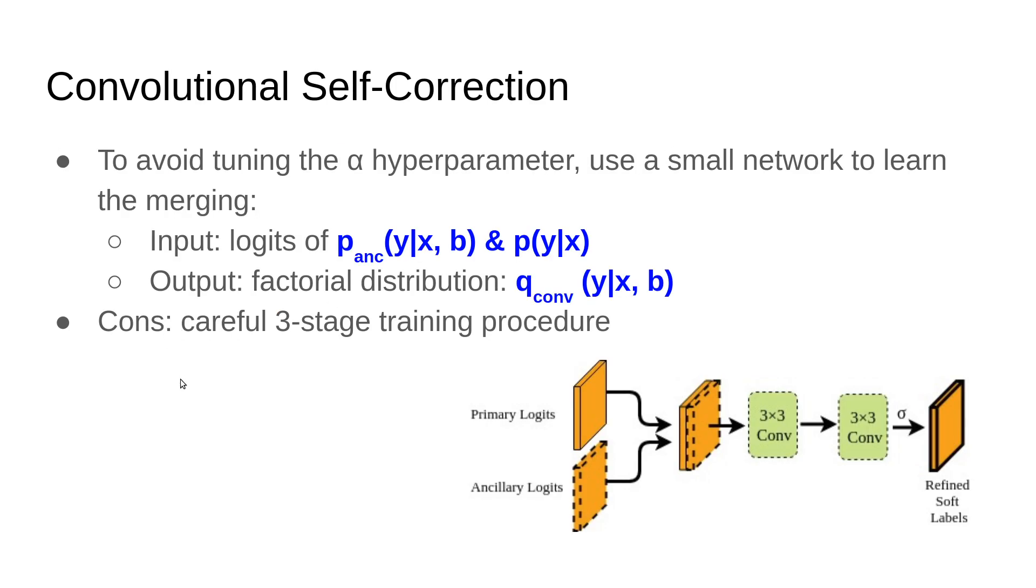If you noticed in the previous work, we needed to use the alpha hyperparameter to do the weighting. If we'd like to avoid such tuning and make it simpler while still thinking about a way to combine them, what about a nonlinear way? Specifically, you have the primary logits and the ancillary logits. You can design a very small network that takes the two kinds of logits and learns how to combine them into new logits. Instead of the math, we can just let the network do it.